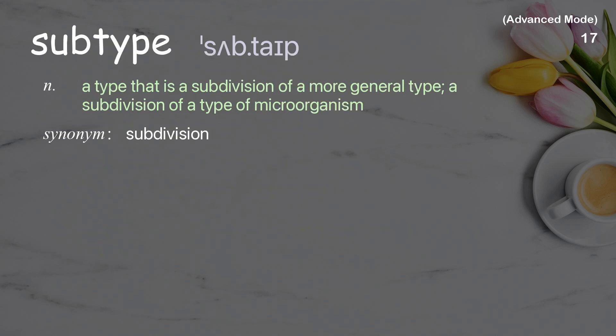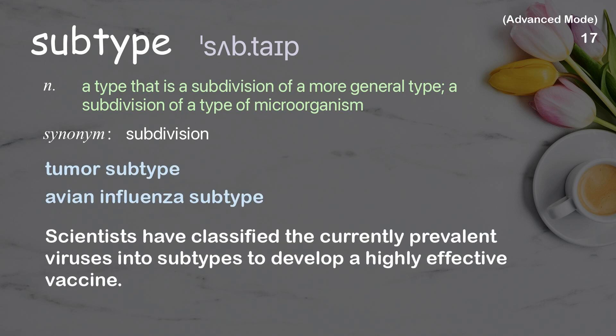Subtype. Examples: Tumor subtype. Avian influenza subtype. Scientists have classified the currently prevalent viruses into subtypes to develop a highly effective vaccine.